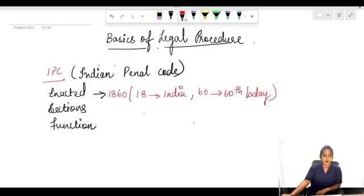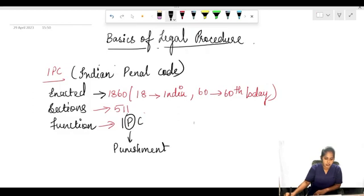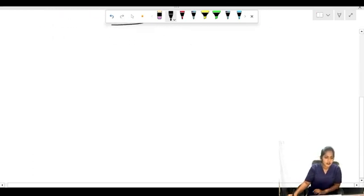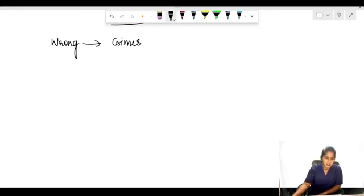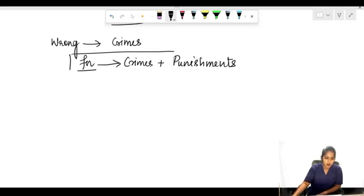So 1860, and the number of sections in it are 511. What is the function? IPC, this P represents punishment. Why punishment? Only if you do a wrong you will get punishment, and that wrong here is considered as crime. So the function of IPC is crimes and punishment. All these sections will be dealing or focusing about this.